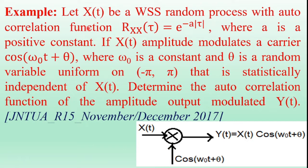The example is: let X be a WSS random process with autocorrelation function e^(−a|τ|), where a is a positive constant. If X(t) amplitude modulates a carrier cos(ωₒt + θ), where ωₒ is a constant and θ is a random variable uniform on (−π, π), statistically independent of X(t), determine the autocorrelation function of the amplitude modulated output Y(t).